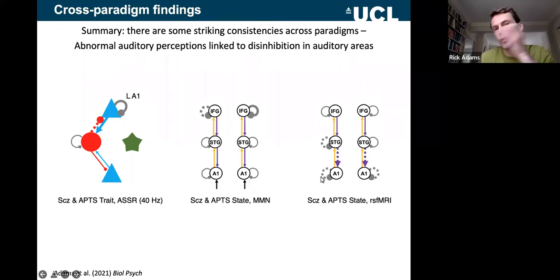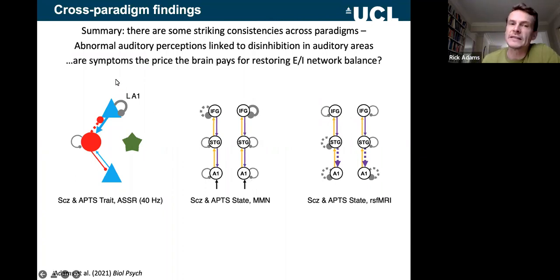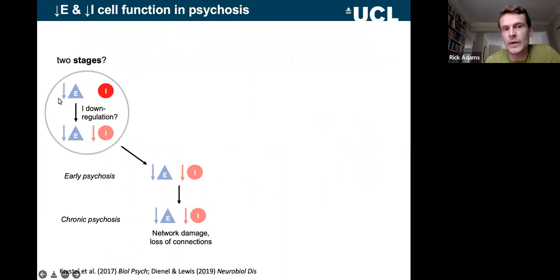So what this seemed to imply was that perhaps symptoms are the price that the brain may pay for restoring a balance between a primary loss of excitability and then downregulating its inhibitory function in order to compensate and rebalance EI function. So this suggests that maybe in schizophrenia you have this primary problem, loss of gain maybe mediated by NMDA receptors on pyramidal cells, but then there's a natural downregulation process that in some causes psychosis, perhaps because representations in cortex have become so imprecise that abnormal inference ensues.